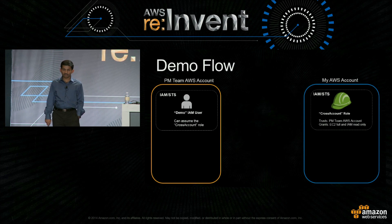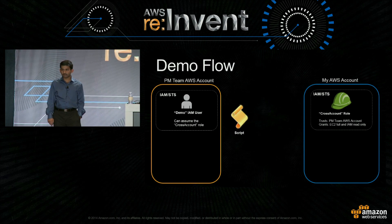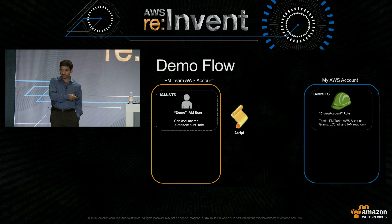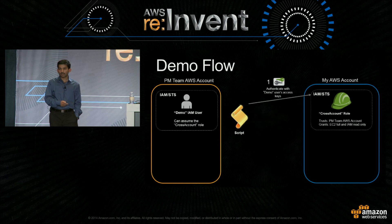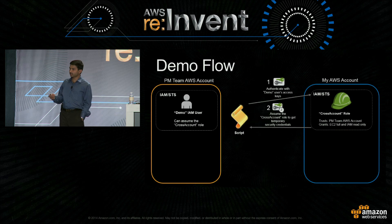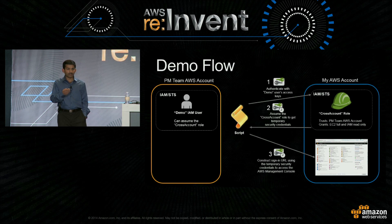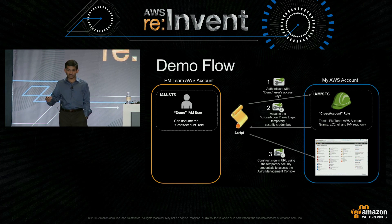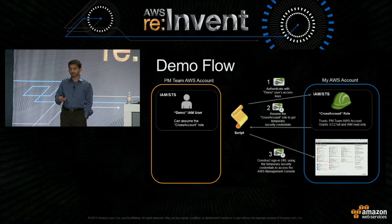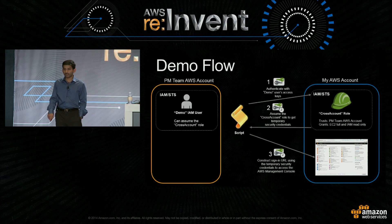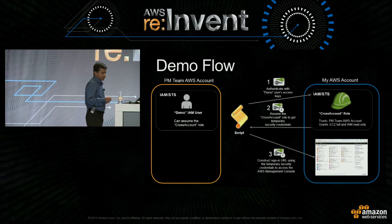On the PM team's account, there is an IAM user with permissions to assume this role in my account. To make things more interesting, I have a Python script which does the following: first, it uses the demo user's credentials to authenticate and assume a role in my account; in return, it gets back temporary security credentials; using those credentials, it generates a console URL, and then the user gets redirected to that console URL so they can access resources in my account.